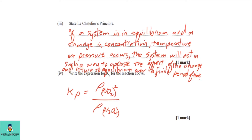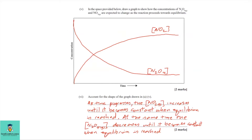Part four: write the expression for Kp for the reaction. The reaction goes from N2O4 to 2NO2. When writing Kp, we use the partial pressure symbol. Kp equals the partial pressure of NO2 raised to its coefficient of 2, over the partial pressure of N2O4. If it were Kc, we would use concentration instead of partial pressure, but this question asks for Kp.